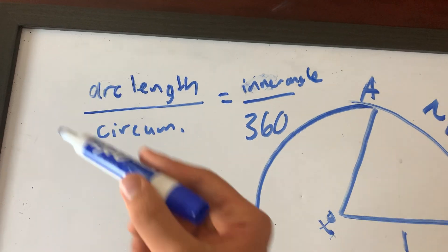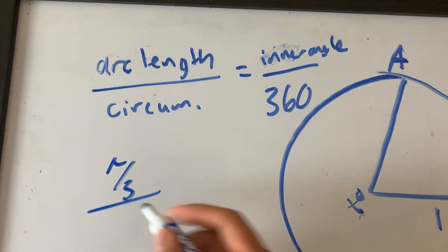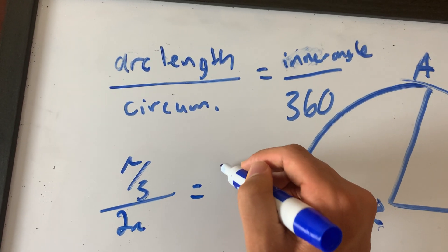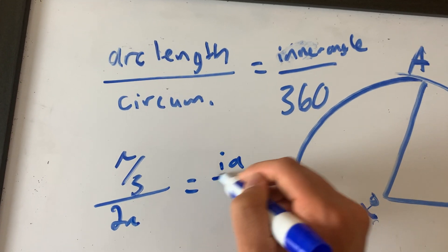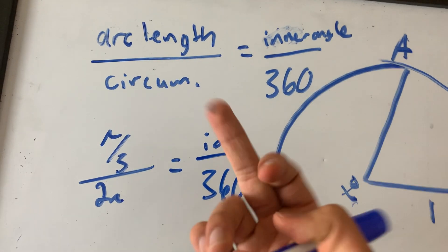So let's sub in what we know. What's the arc length? Pi over three, okay? Circumference, two pi r. Radius is one, so two pi is equal to inner angle. Let's say inner angle IA, okay? Over 360. So we don't know this inner angle. We're trying to find x. So let's find the inner angle first, okay?